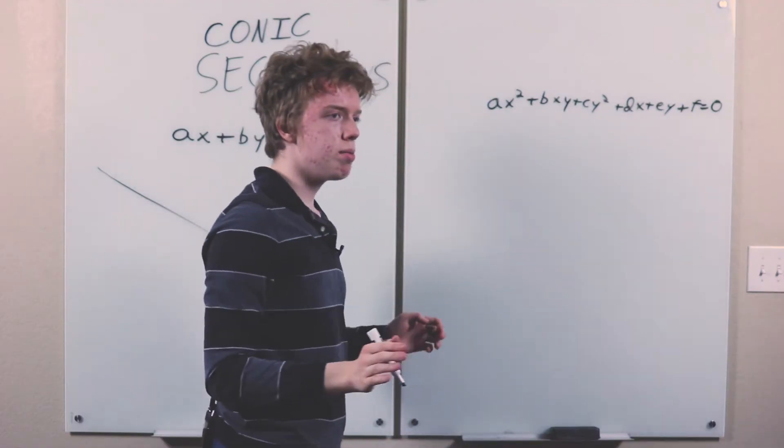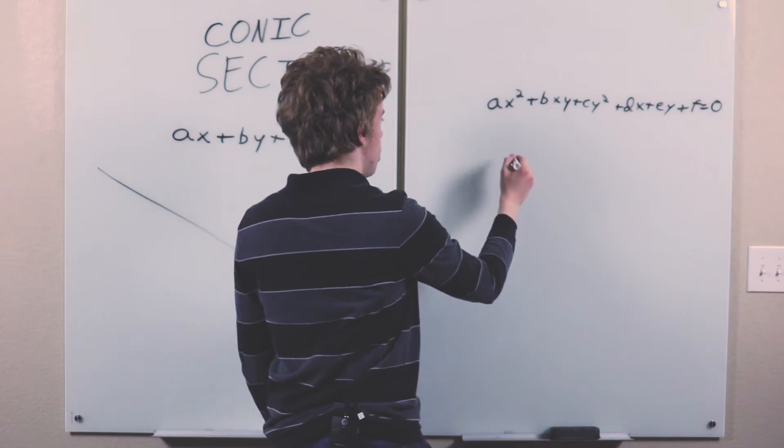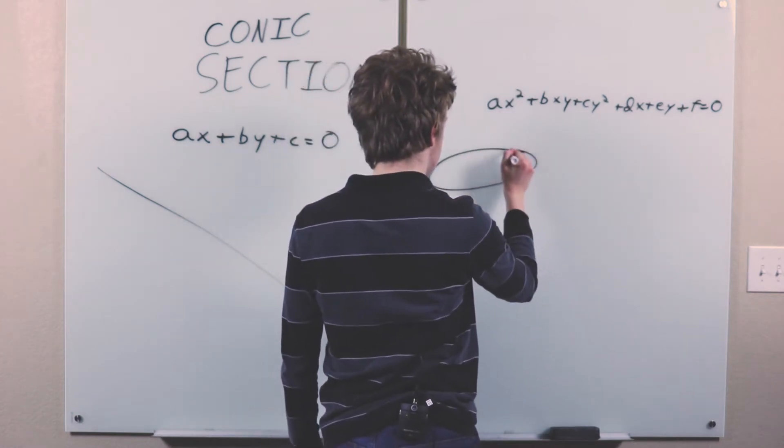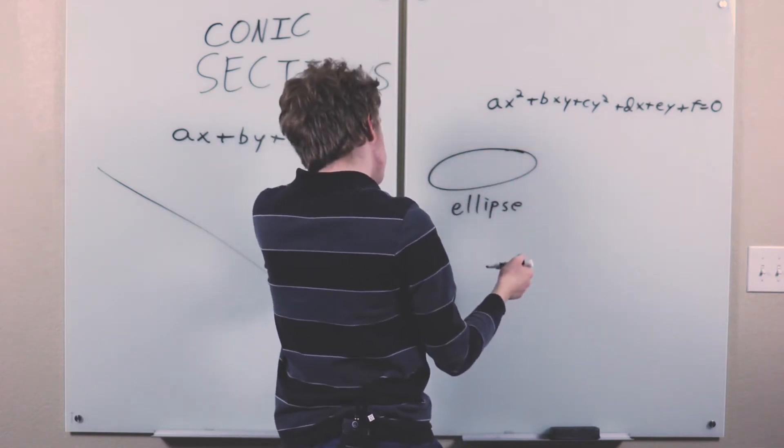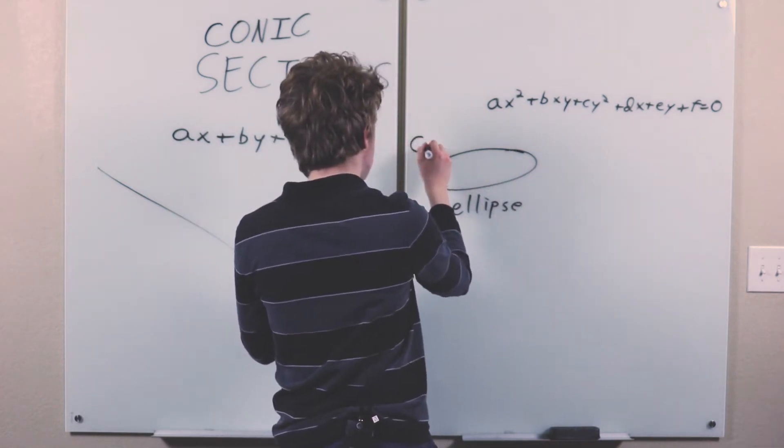And there are these three main types of conic sections. There's an ellipse like this. Well, more symmetrical than that, but it's a closed loop. And a circle is a special type of ellipse.